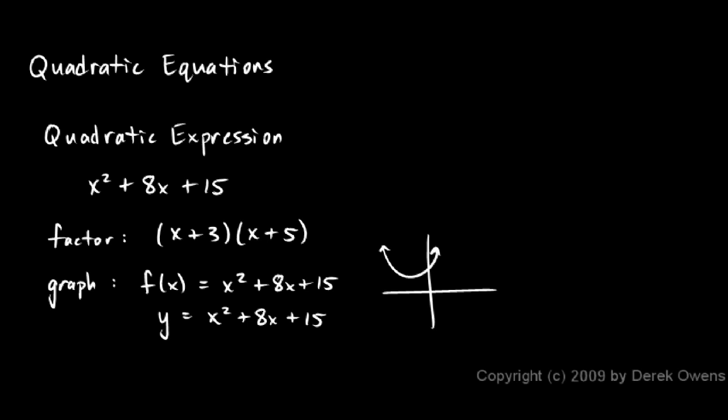For example, if we had something like this, here's a quadratic equation: x squared minus 8x plus 2 equals 0.